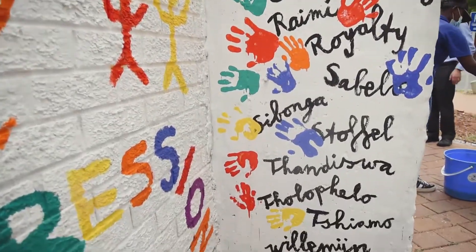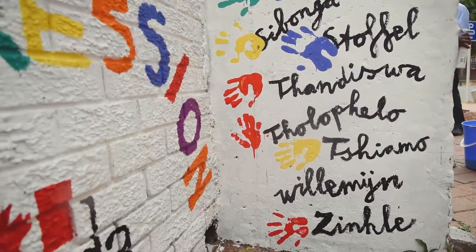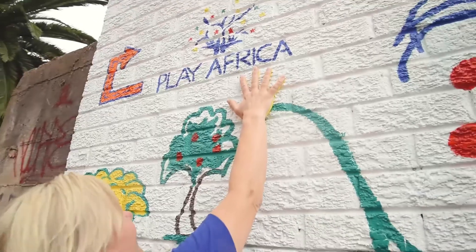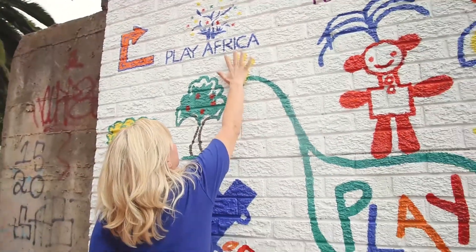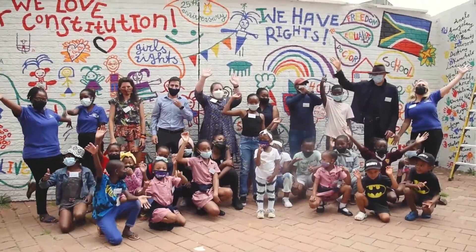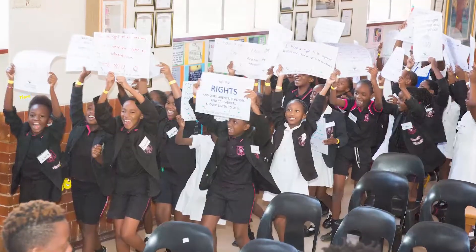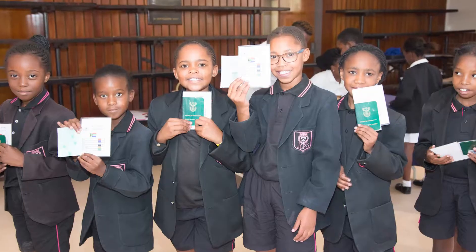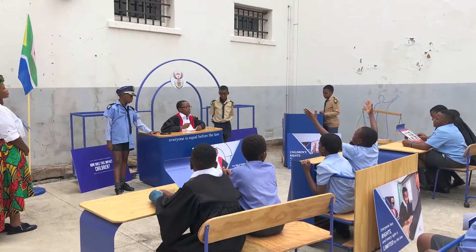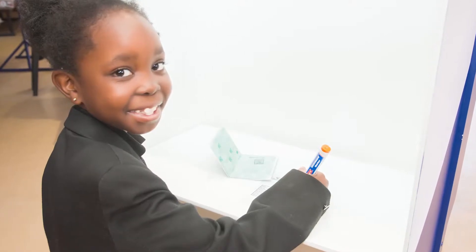Democracy only works when people understand what it is and why it's so important. In South Africa, children today don't remember the struggle for democracy or the signing of the Constitution, which is why our work is so important. We're making the Constitution and what it means come alive for a new generation, and we do that through play — by teaching children the foundational values of the Constitution: equality, freedom, and human dignity. This is critical because it will help children to better exercise their rights and responsibilities as active citizens in a democratic society.